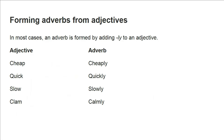Slow is an adjective used with a noun to describe it. Slowly is its adverb form, made by adding -ly. Calm → calmly, again by adding -ly. So this is one procedure: simply add -ly to an adjective to form an adverb.